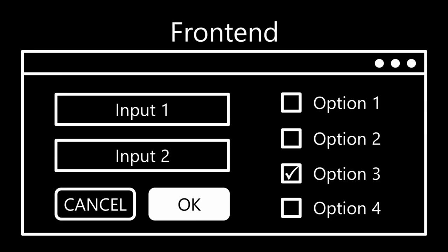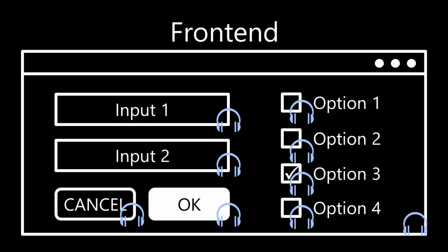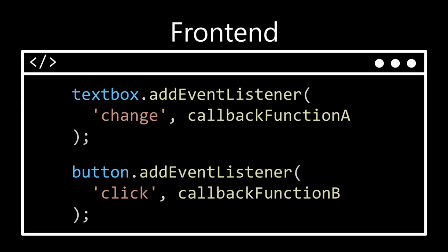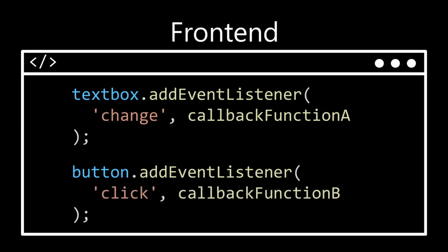Since you cannot predict where and when a user may take actions, and what actions a user may take, using event listeners is critical in front-end development. You will be registering event listeners on different UI elements to respond to different events generated by user actions. Registering an event listener means telling the front-end what function to execute when a particular event is generated from an element. For example, you could tell the front-end to execute callback function A when a change event is generated from the text box, and execute callback function B when a click event is generated from the button.